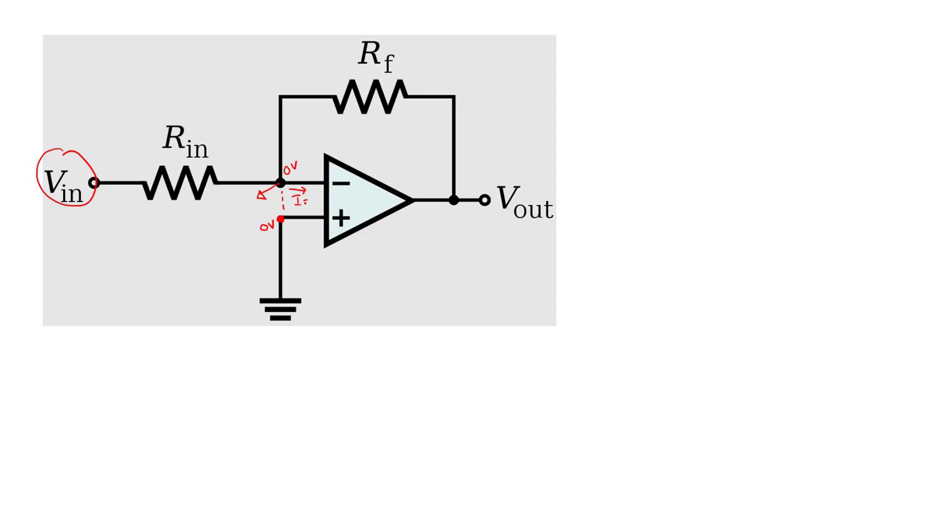Op-amp draws no current, so in this direction current is 0. Apply KCL at this node. So, (0 - Vin)/Rin + (0 - Vout)/Rf equals 0. After simplifying this equation, Vout equals minus Rf by Rin into Vin.